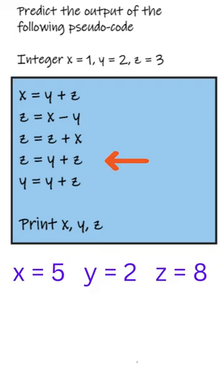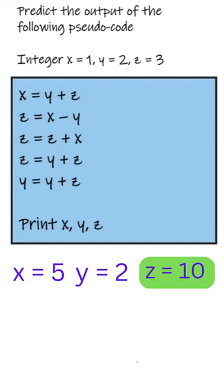In the fourth line we have to perform z equals to y plus z. y contains 2 and z contains 8. The result is 10 which will be stored in z. So z will now contain 10.